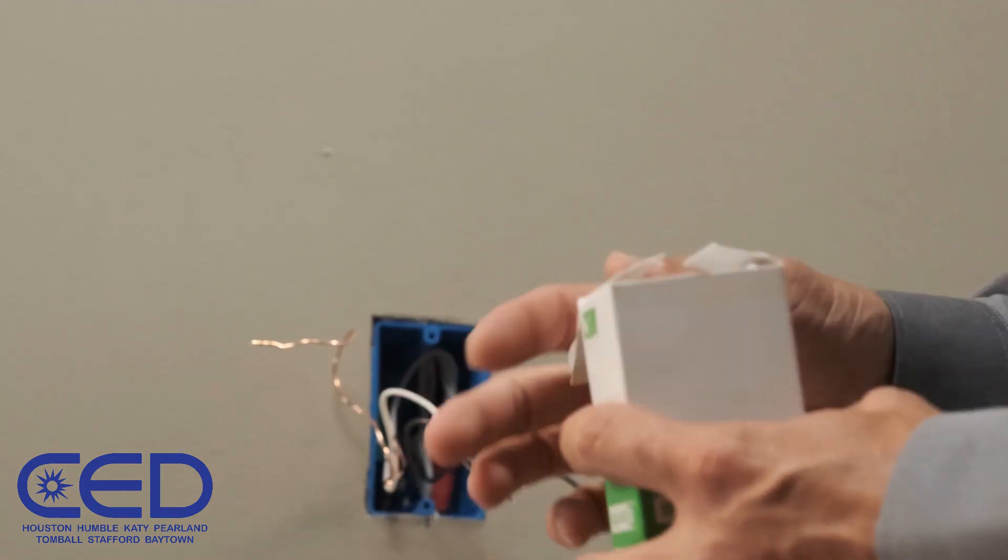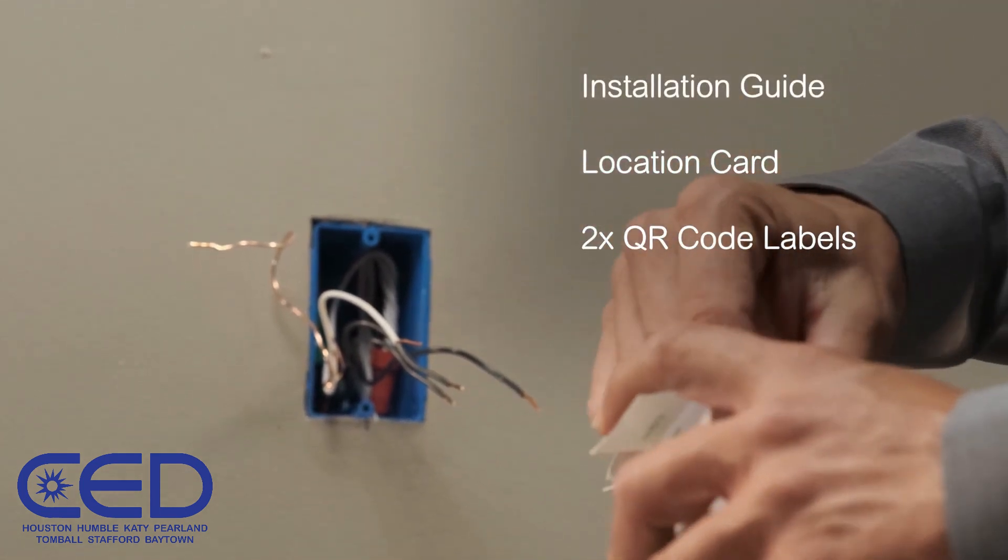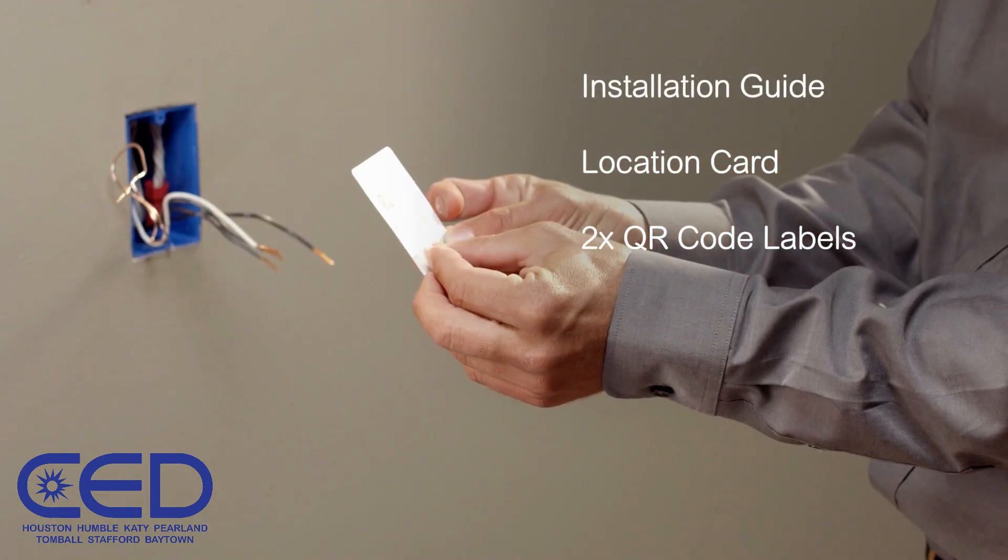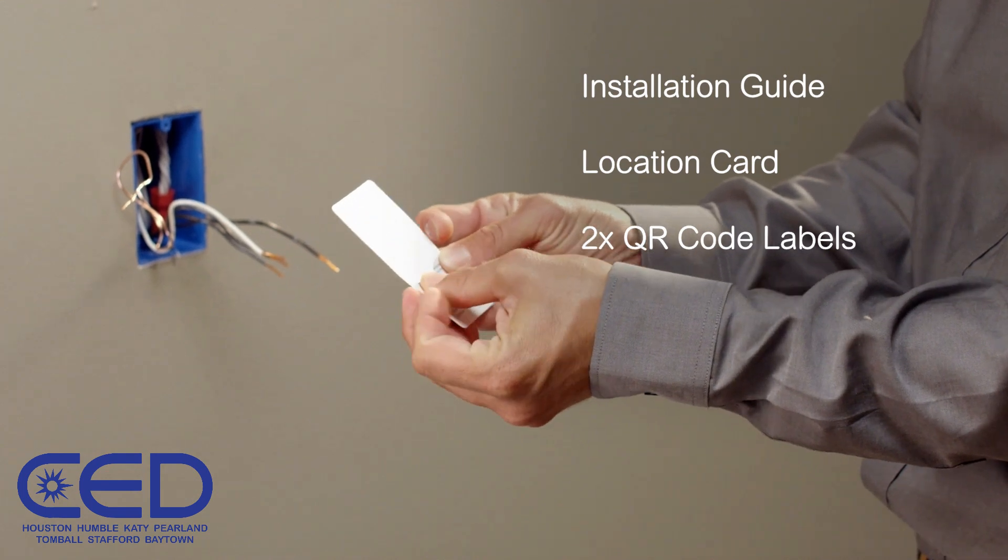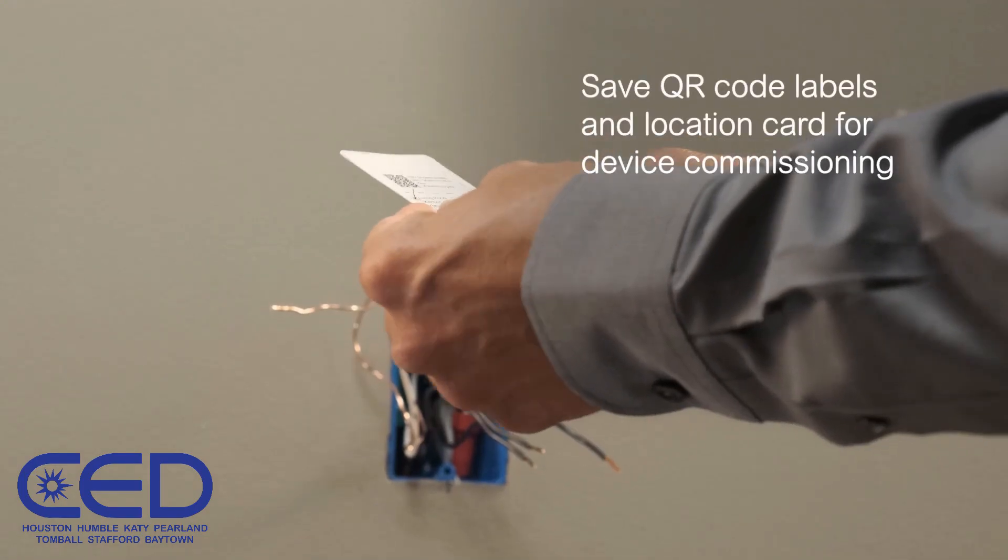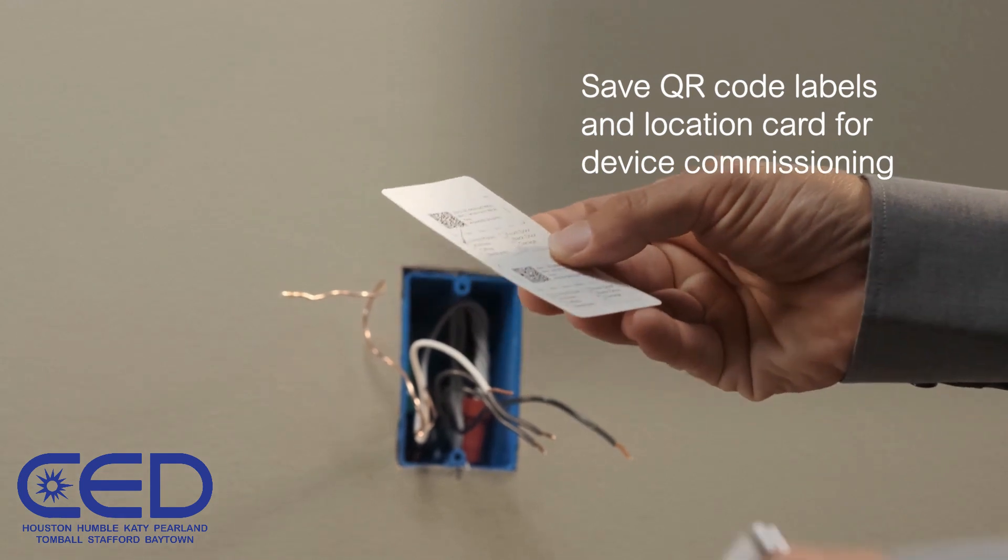Upon opening the box, you'll notice the device is wrapped in the installation guide along with a QR code location card and sheet with two QR code labels. You'll need the QR code later to commission the device on the network.